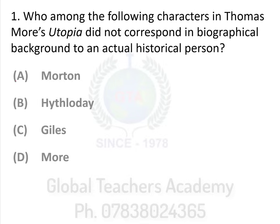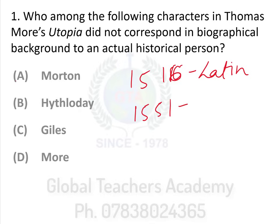A little bit about Thomas More's Utopia: the text was written in 1516 in Latin, and it was translated in 1551 by Ralph Robinson into English. The term utopian literature, as we understand it now — about a text that talks about a land that is better than your actual world — comes for the first time from Thomas More's text itself.